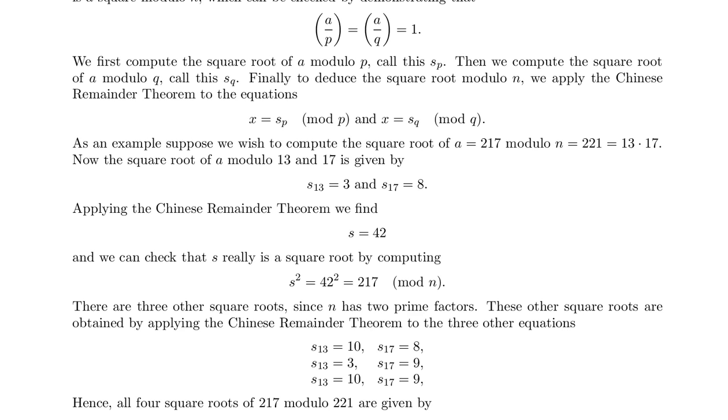There are three other square roots, since n has two prime factors. These other square roots are obtained by applying the Chinese Remainder Theorem to the three other equations: s_13 equals 10, s_17 equals 8; s_13 equals 3, s_17 equals 9; s_13 equals 10, s_17 equals 9.